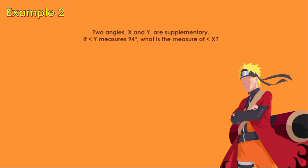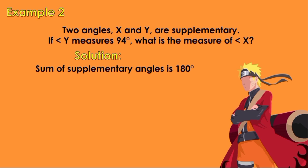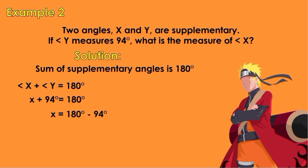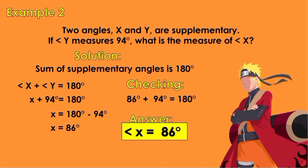Example 2: Two angles, x and y, are supplementary. If angle y measures 94 degrees, what is the measure of angle x? Solution: the sum of supplementary angles is 180 degrees. Angle x plus angle y equals 180 degrees. Substituting: x plus 94 degrees equals 180 degrees, so x equals 180 minus 94 degrees, giving x equals 86 degrees. Check: 86 degrees plus 94 degrees equals 180 degrees. Therefore, angle x is equal to 86 degrees.